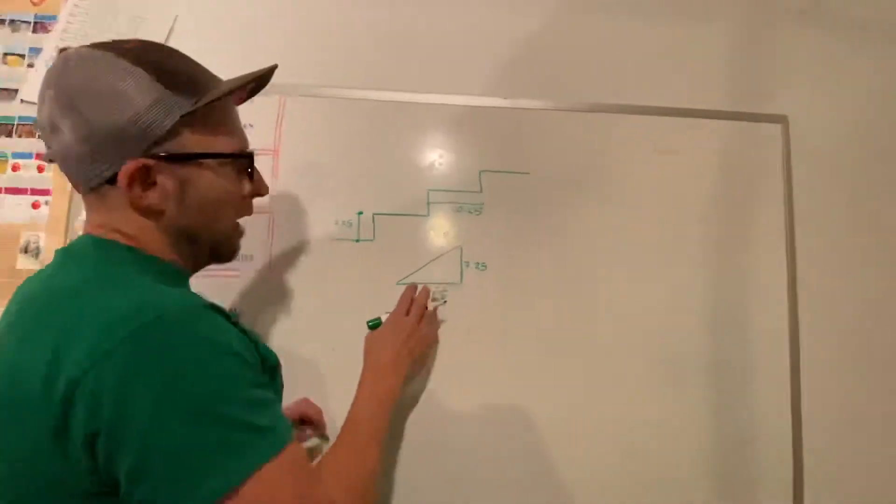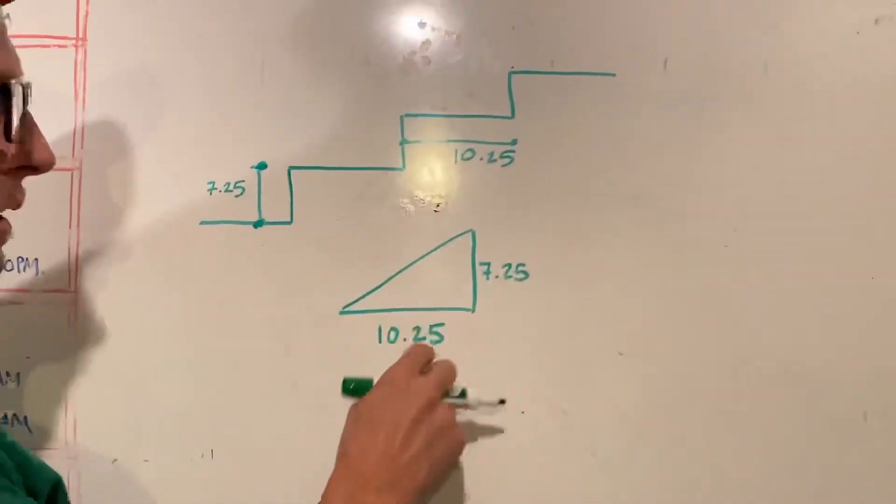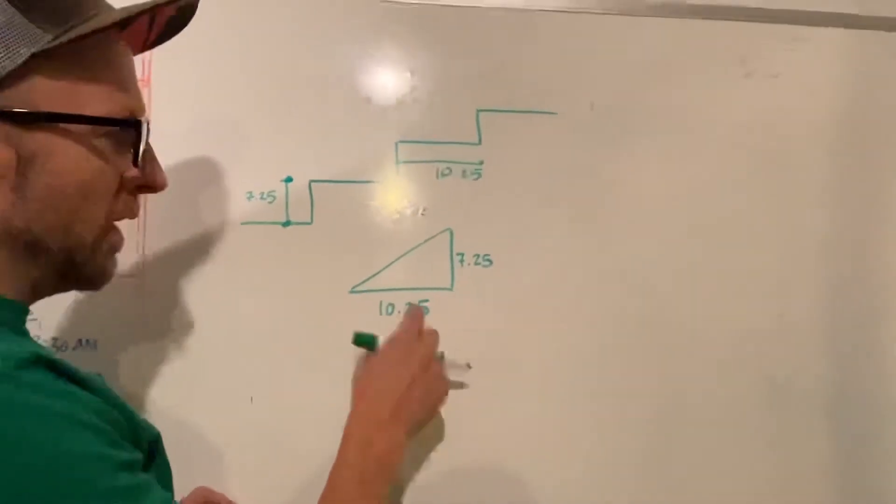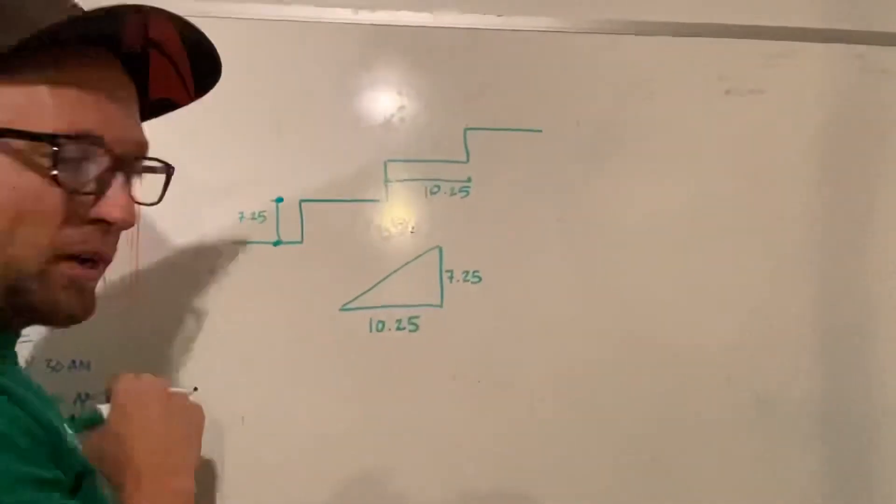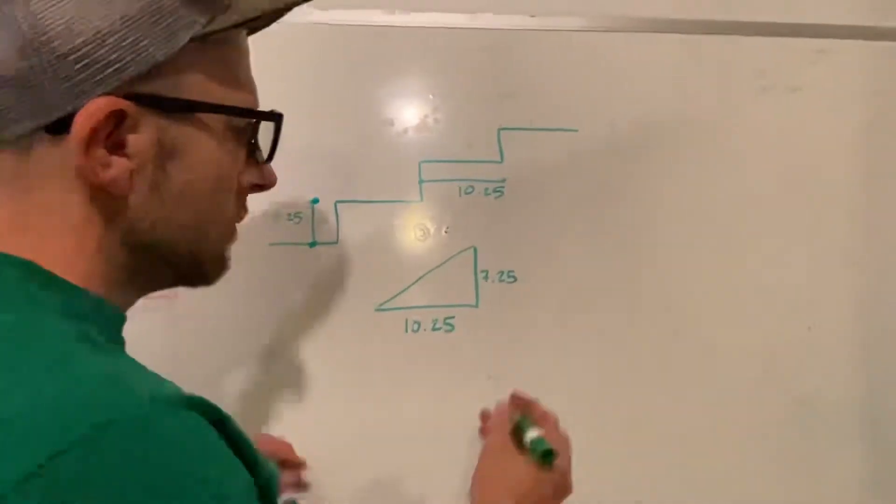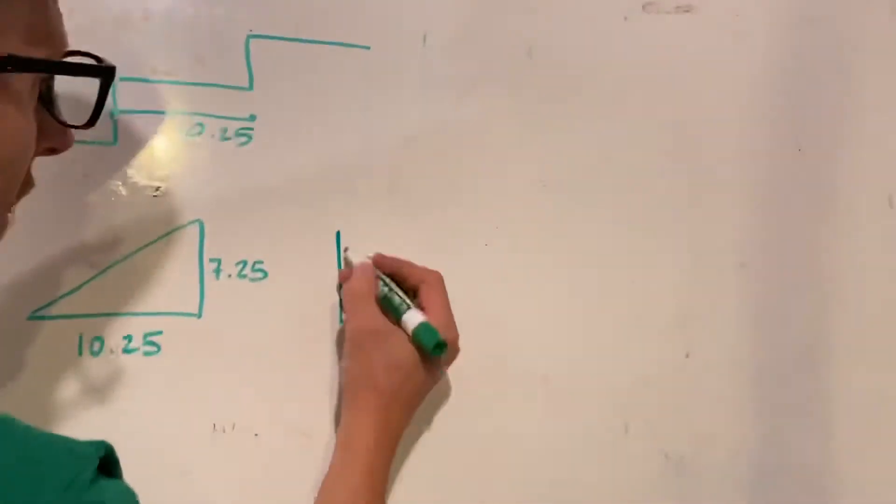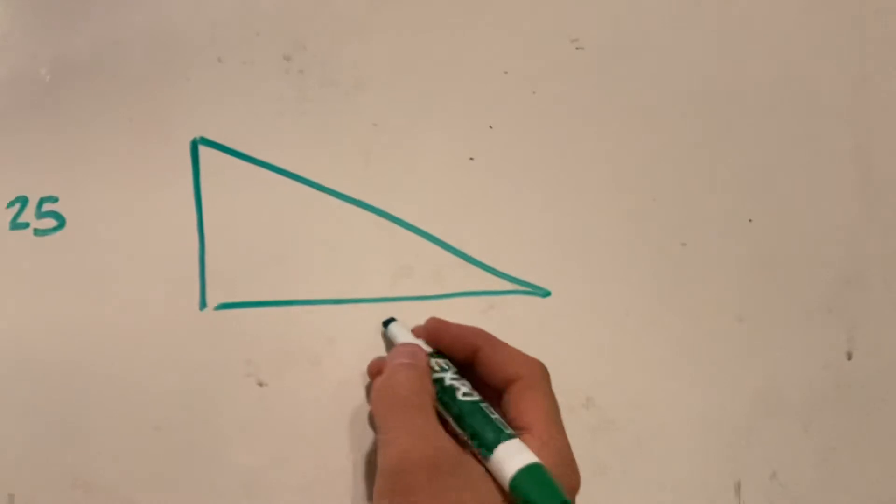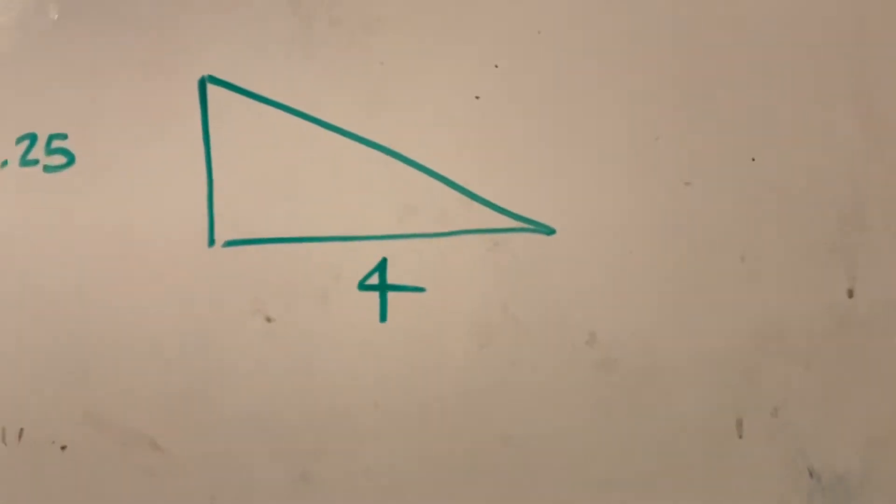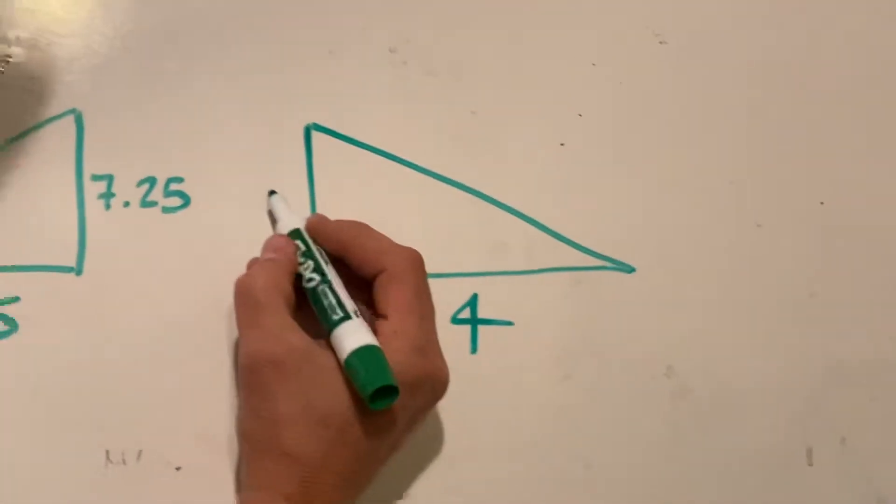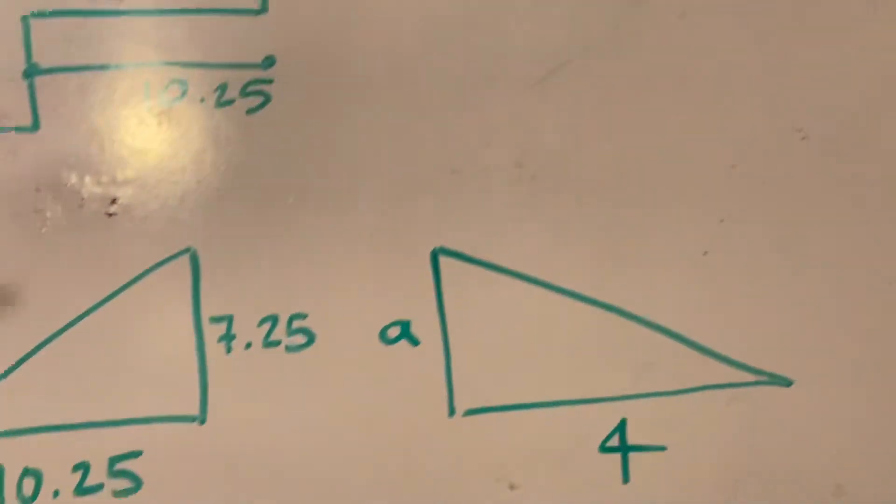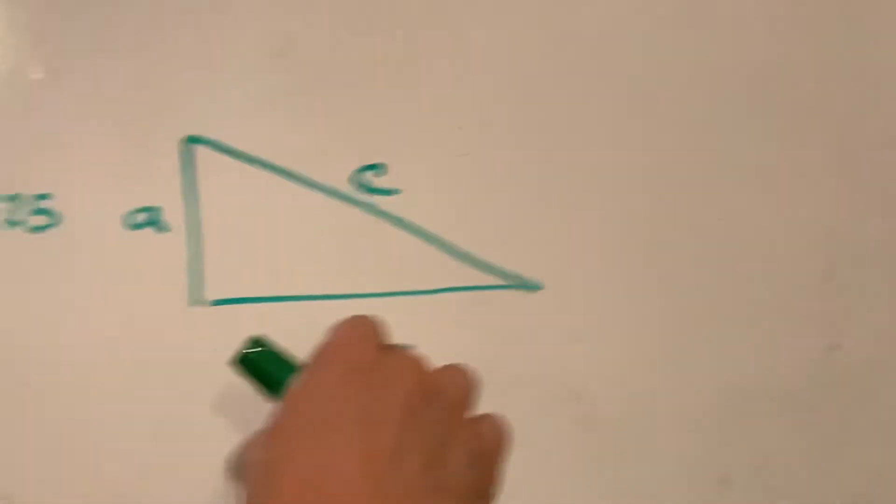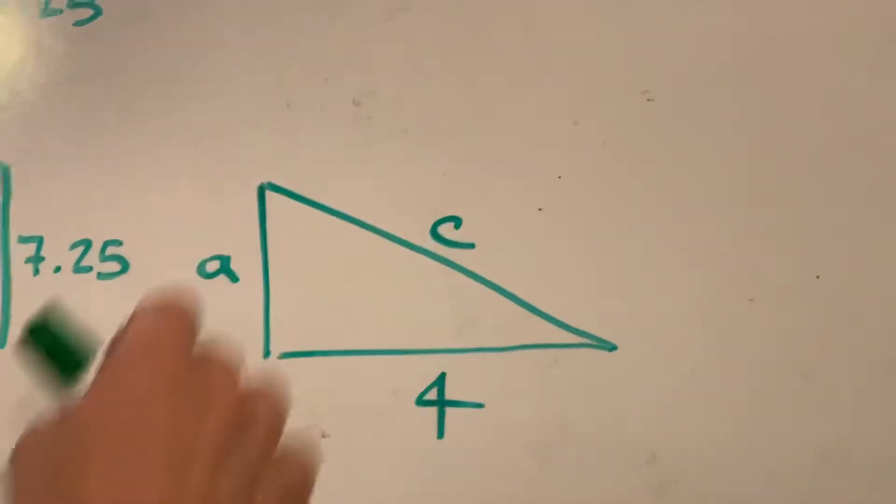So I'm going to put this in terms of a right triangle. So along the horizontal axis or along our run, we're 10.25 and our riser is 7.25. Now I want to find out if I'm going to make this other right triangle here. Along our horizontal axis, we know that we want to be four inches apart and we'll call our rise a, and what we want to know is C. We want to know what this is. If this is four, what is C going to be?